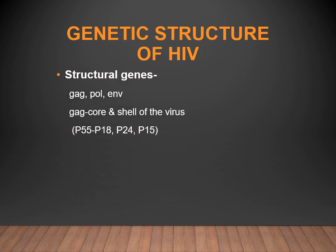The genetic structure of HIV has three structural genes: gag, pol, and env. The gag gene codes for the core and shell of the virus. Initially it produces a precursor protein P55, which is later cleaved into three parts: P18, P24, and P15. P24 is used in diagnosis — it can be detected in laboratory testing.